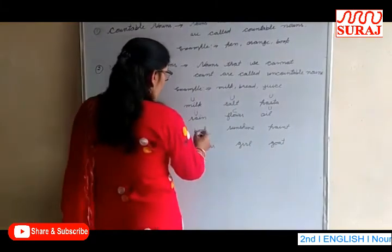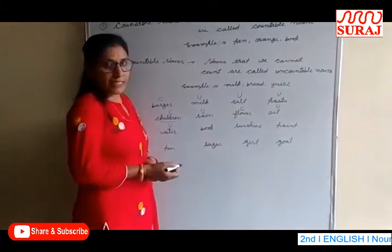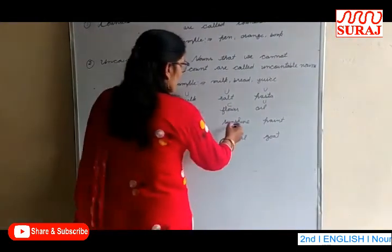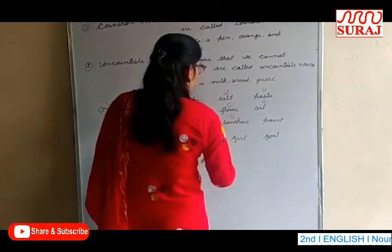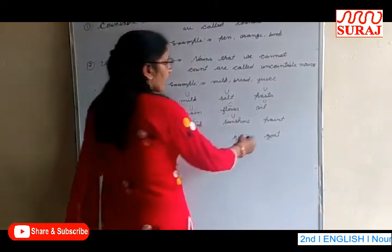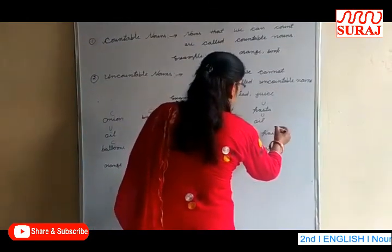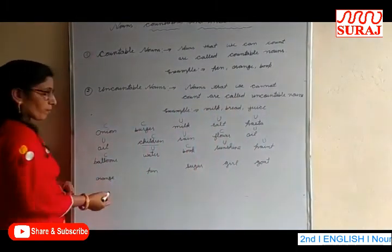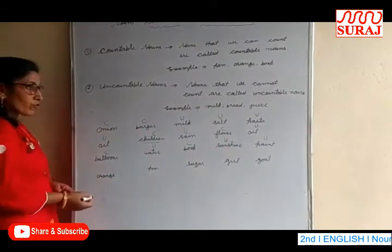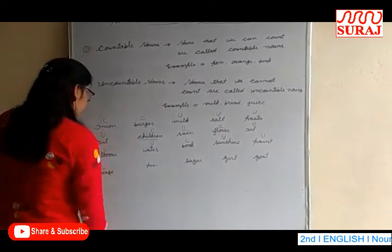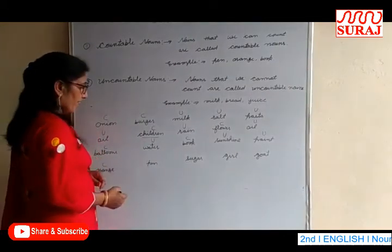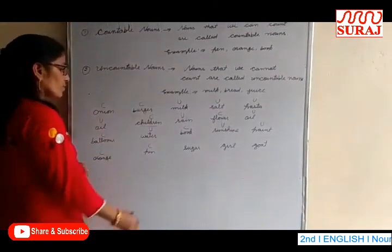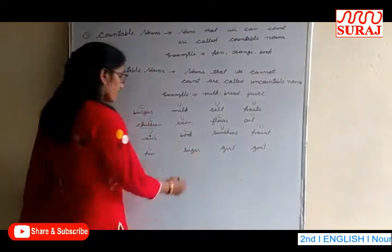Book — we can make it plural, so book is countable. Sunshine — uncountable. Paint — uncountable. Orange — orange has a singular and plural form, so orange is countable. Pen — countable. Sugar — sugar is uncountable.